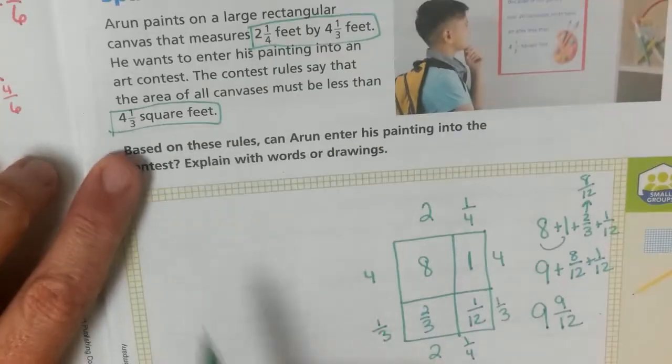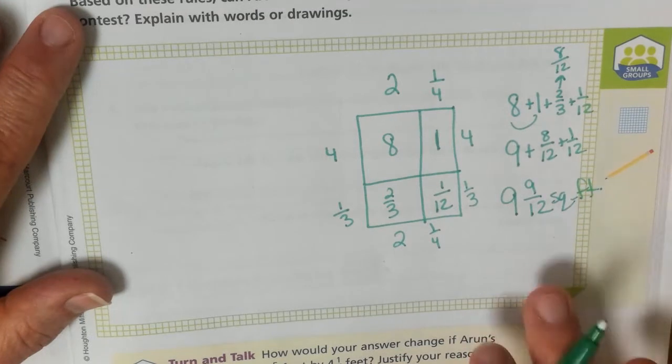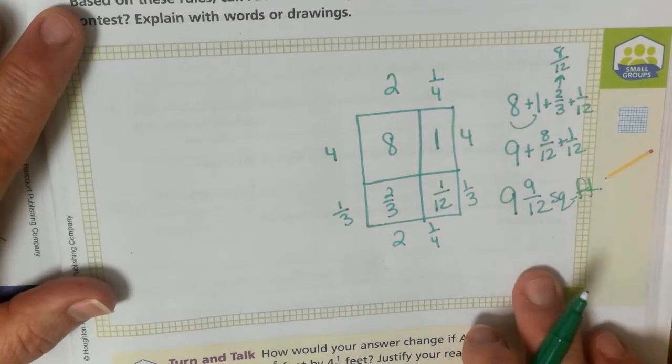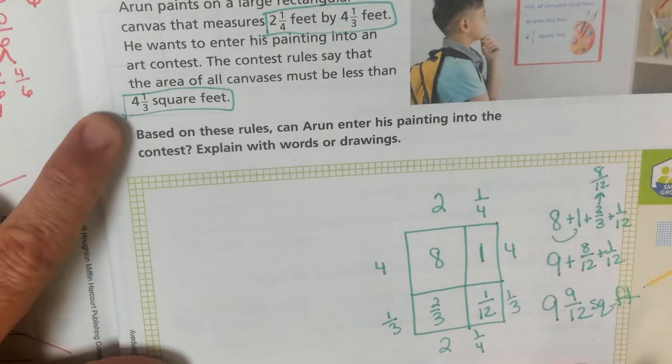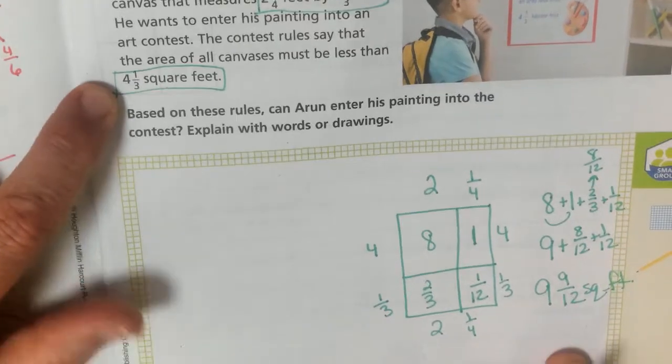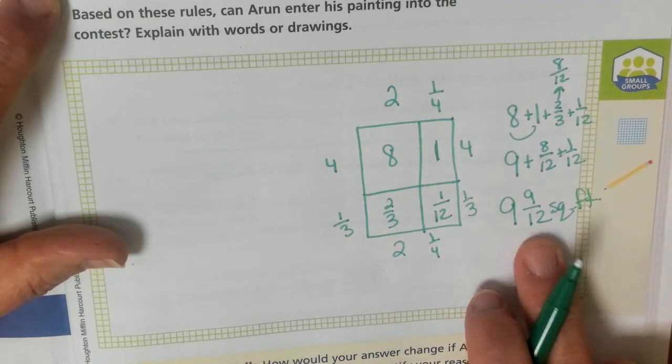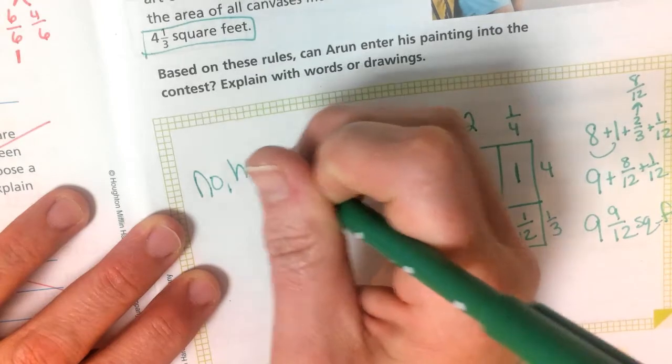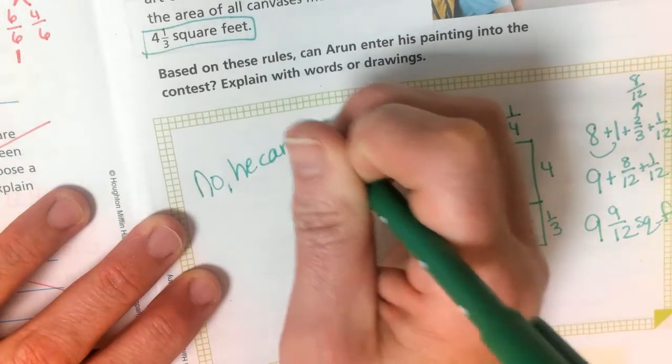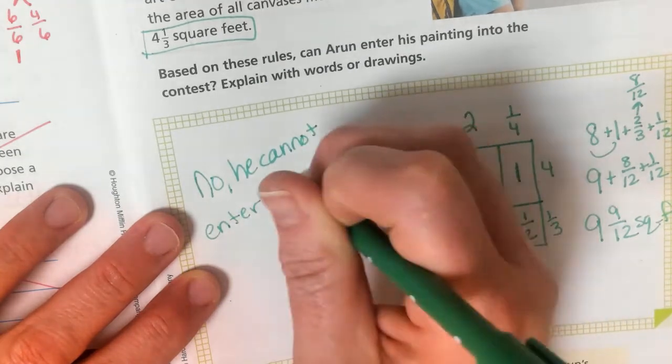So, our 2/3 would become, multiply top and the bottom by 4, 8 twelfths, and 1 twelfth. So, we would have 9 and 9 twelfths square feet. That's how large the canvas he has. And, he wants to enter that painting in. Will he be able to enter it into the contest? No, because it needs to be less than 4 and 1/3 square feet. And, his is double that. So, no, he cannot enter the contest.